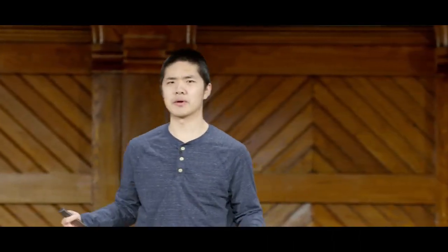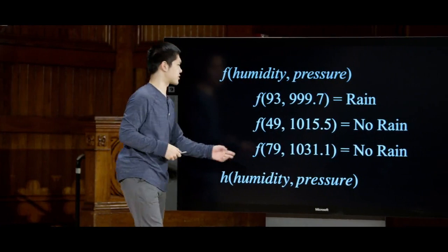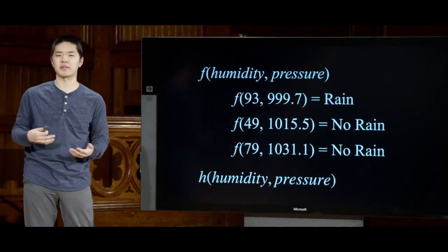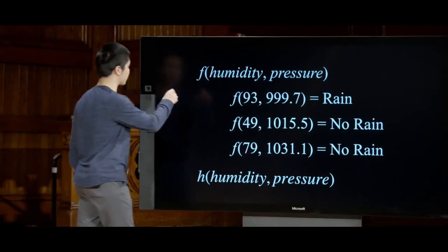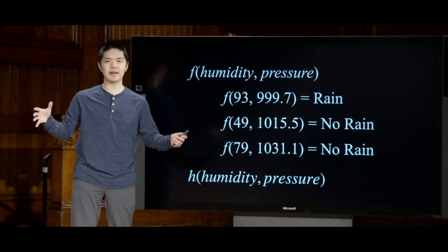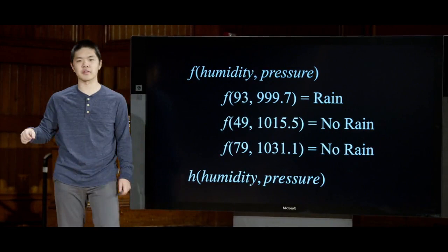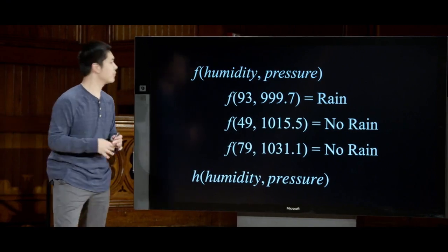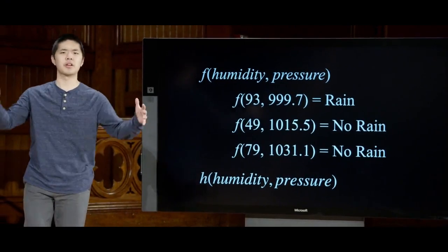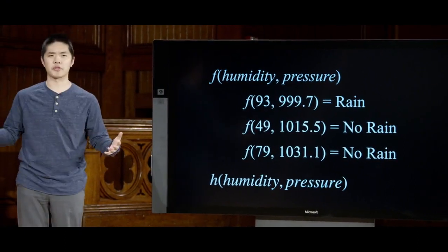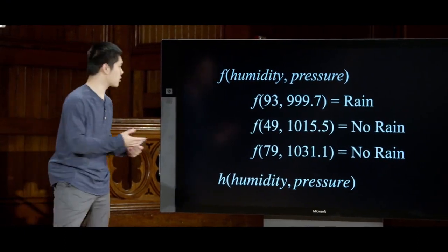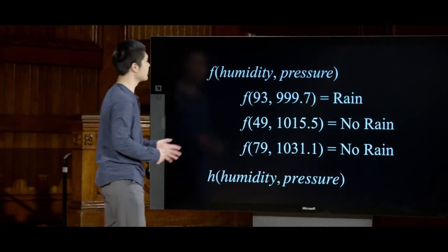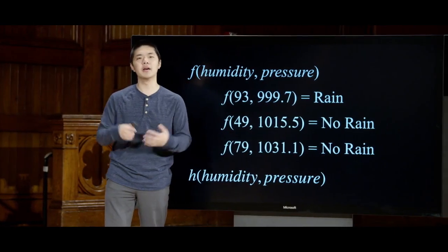A reasonable thing to do, especially with two numerical values, is to try to plot this on a graph with an x-axis and a y-axis. These same ideas scale as you add more and more inputs. While we'll be plotting things in two dimensions, you could add more inputs and imagine things in multiple dimensions. A computer has no problem thinking in 10 or 100 dimensions, because each dimension is just some separate number it is keeping track of. But for now, we've got two inputs — the x-axis representing humidity, and the y-axis representing pressure.